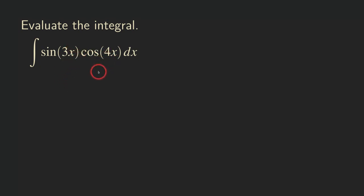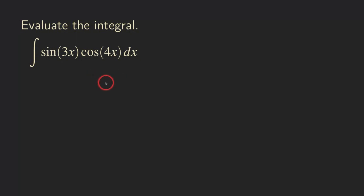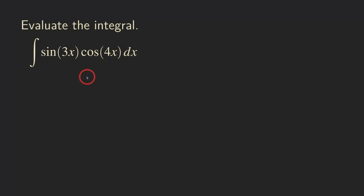One way to do it is to use integration by parts, because this is a product. Another way is to use the trig identity. If you know the sum and the difference formula for the sine, then you can use that to manipulate this expression into something else that we can integrate directly.